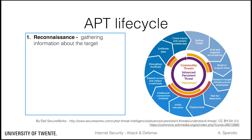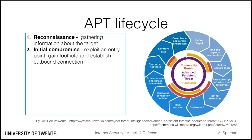In the reconnaissance phase, the attackers gather information about the target organization, not just in a technical sense, but also in a social and economical sense. Once this is done, the attackers progress to the first real attack — the initial compromise of one of the possible entry points identified in the previous step. In this step, the attacker also takes care of having a working outbound connection.